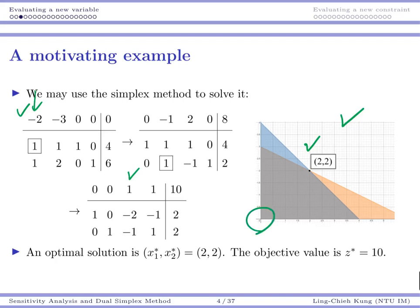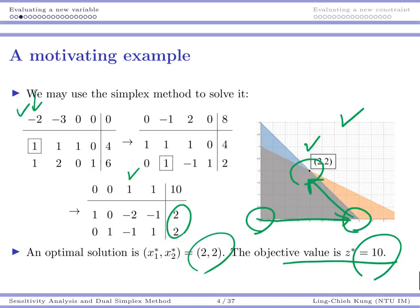If we want to visualize that, our initial point is here. We go one iteration to increase x1, another iteration to increase x2, and then we stop at the optimal solution (2,2). Plugging back (2,2) into our objective function, we get 10. This is our optimal solution: we should produce two units of product one, two units of product two, and eventually earn $10. Everything looks fine.